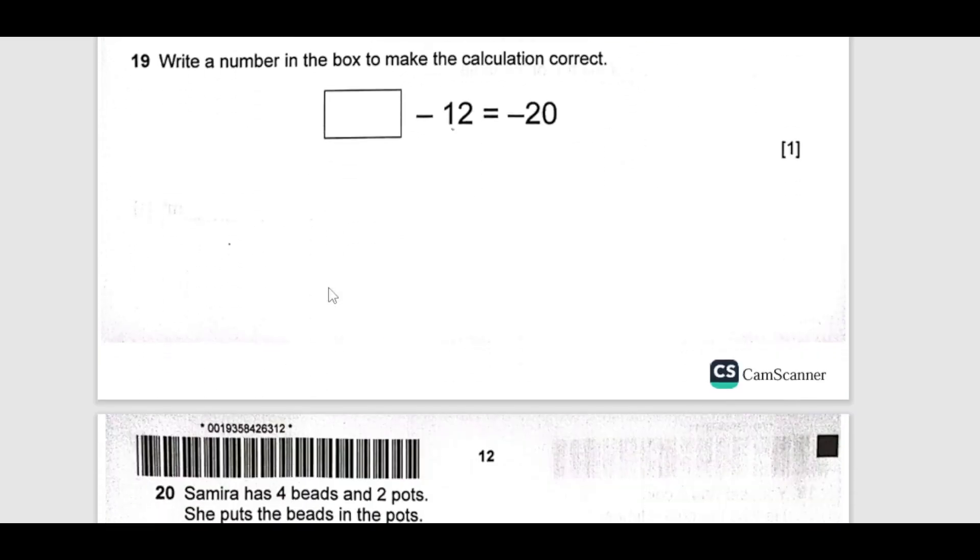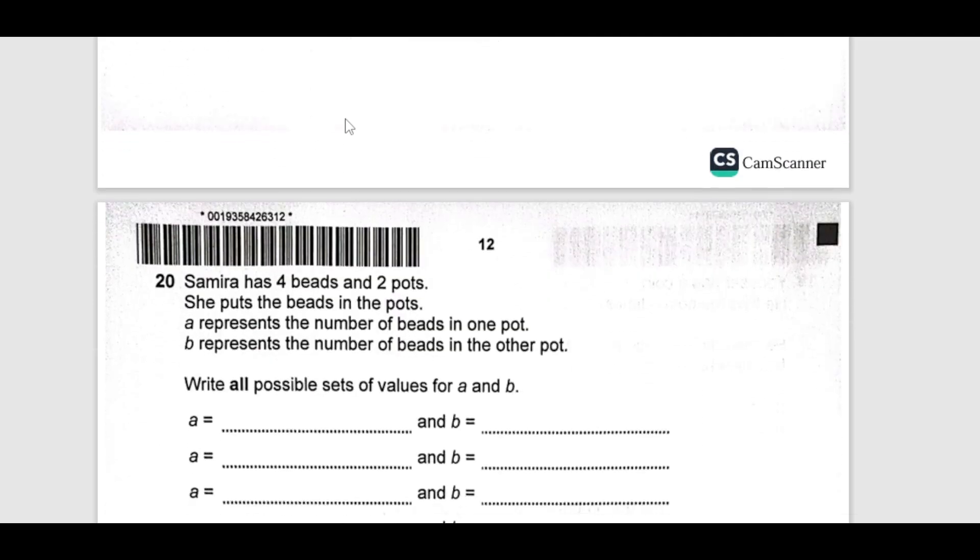Write down a number to make this calculation correct. The answer is 20. If we add 8 here, it will make it 20. But it should be negative because 12 is also negative. Minus 8 minus 12 will give you minus 20.